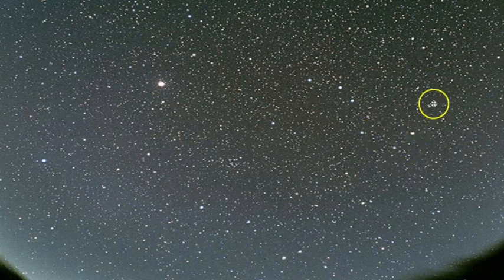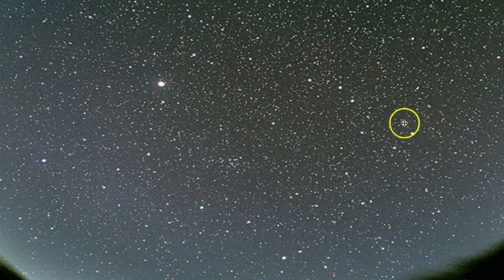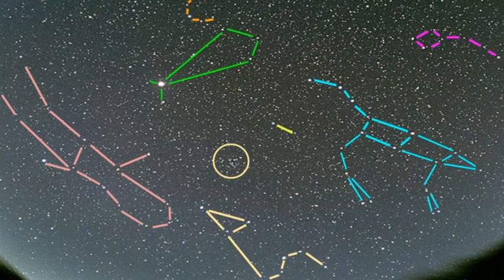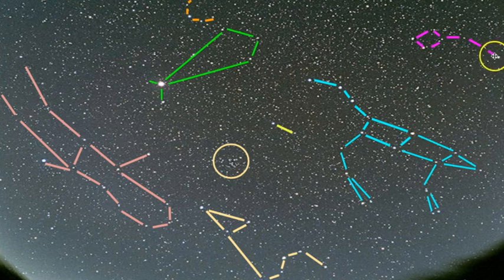Using the pointer stars, aim toward Polaris where the Little Dipper is located. Then the pointer stars can also aim you to Leo the Lion — there's the backwards question mark and the back end of the lion. So from Ursa Major you arc to Arcturus, speed to Spica, use the pointer stars to find Polaris, and also aim to Leo the Lion. This covers a huge section of the sky with many constellations.